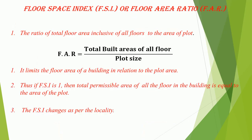Floor Space Index (FSI), or Floor Area Ratio (FAR), is the ratio of total floor area inclusive of all floors to the area of the plot. It limits the floor area of a building in relation to the plot area. Thus, if FSI is 1, then the total permissible area of all floors in the building is equal to the area of the plot. The FSI changes as per the locality.